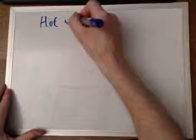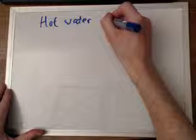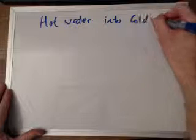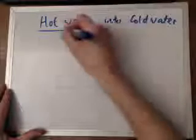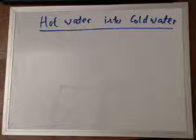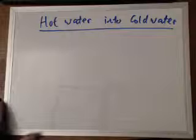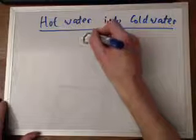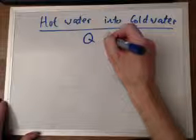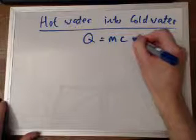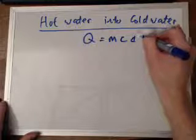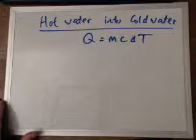Hello. In this video we will look at what happens to the temperature when you pour hot water into cold water. What is the final temperature of the mixture going to be? We'll be using the equation that energy transfer equals mass times specific heat capacity times change in temperature: Q = mcΔT. This is a specific heat capacity style question.